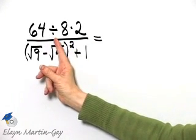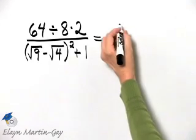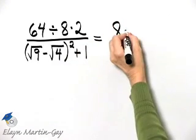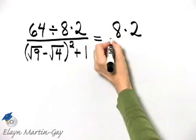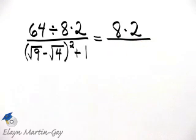64 divided by 8 is 8. So I have 8 and then times 2 so far above the fraction bar.